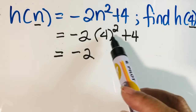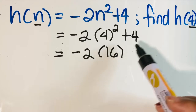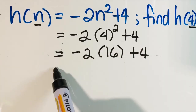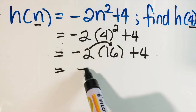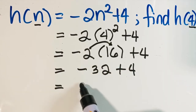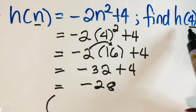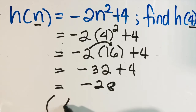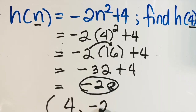Simplify. This is negative 2 times 4 squared. What is 4 squared? That is 4 times 4, which is 16, plus 4. So negative 2 times positive 16 equals negative 32, and negative 32 plus 4 equals negative 28. Therefore, when the value of n is 4, your range is negative 28.